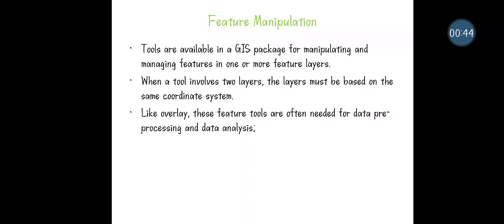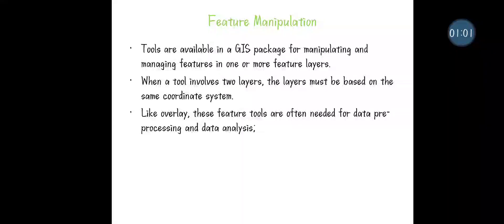If you are working on two different feature layers, make sure that both feature layers are in the same coordinate system. Similar to overlay — in overlay, both feature types should exist in the same coordinate system. Similarly, if you are applying feature manipulation tools, both feature layers should be existing in the same coordinate system.